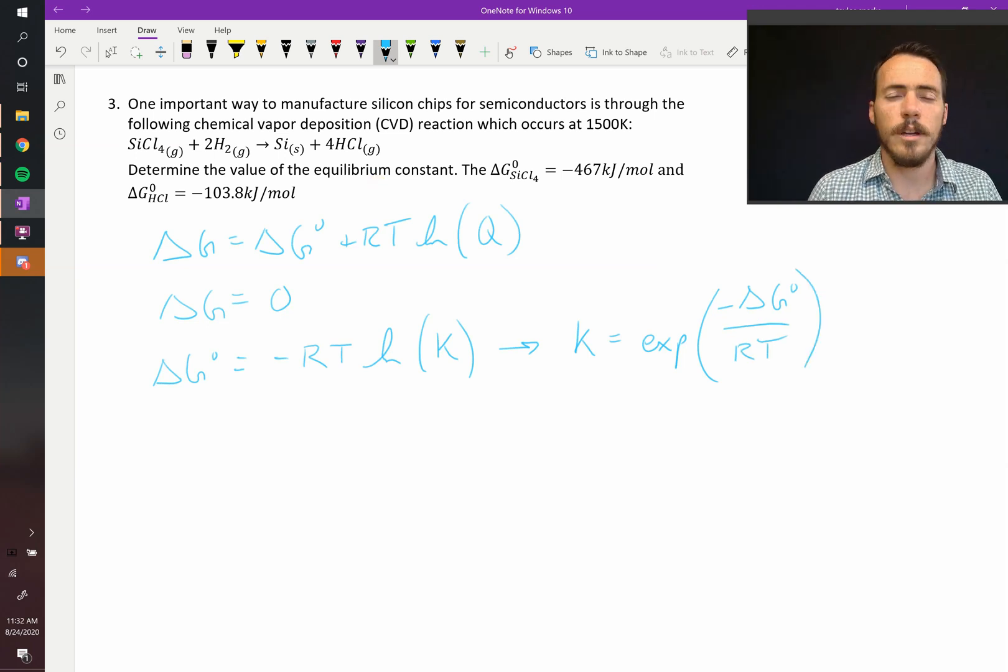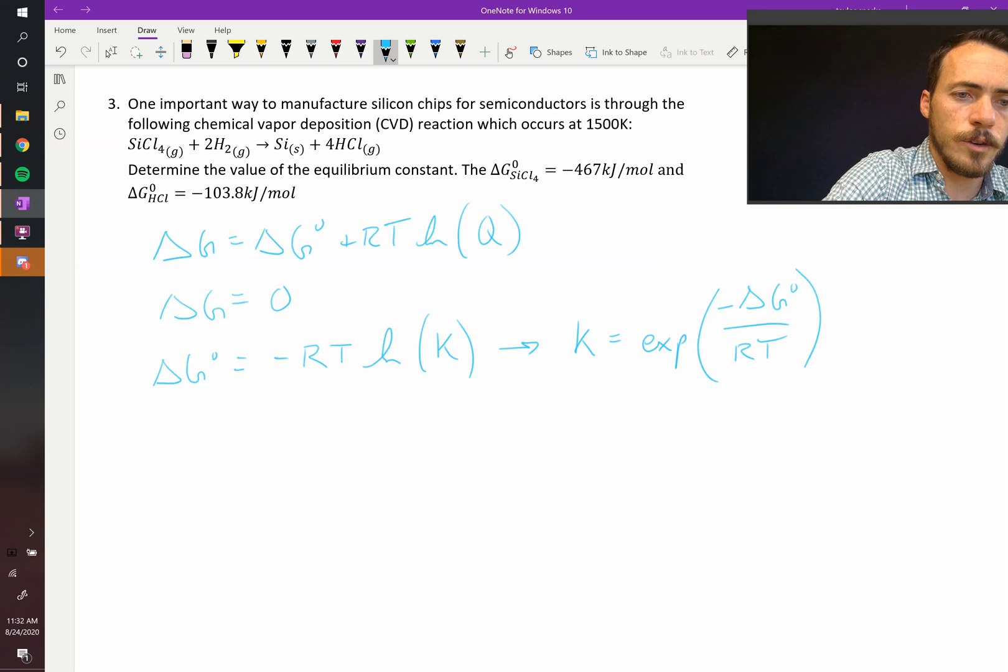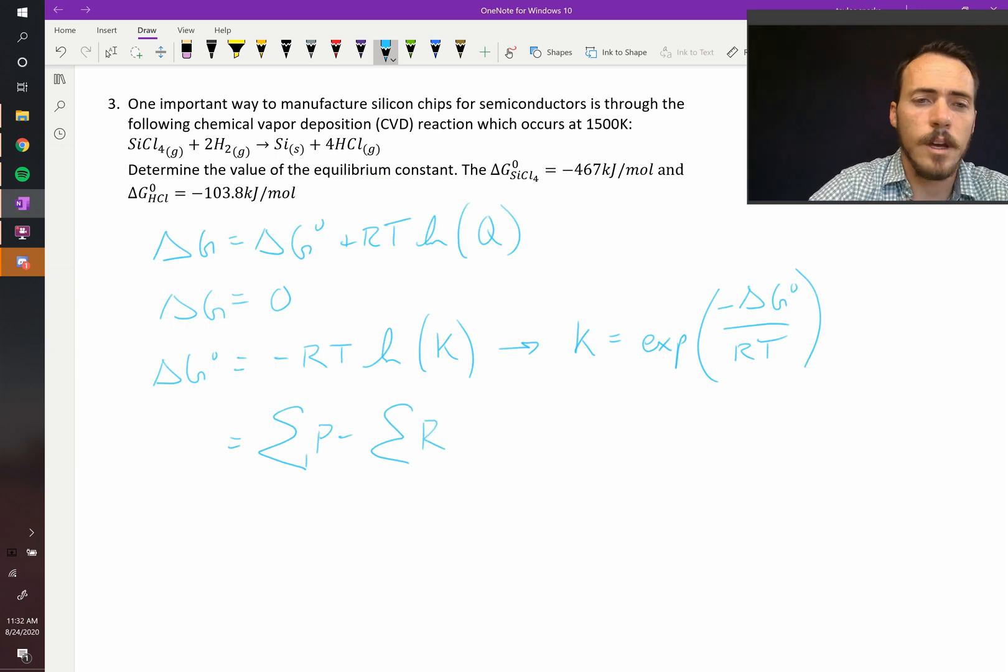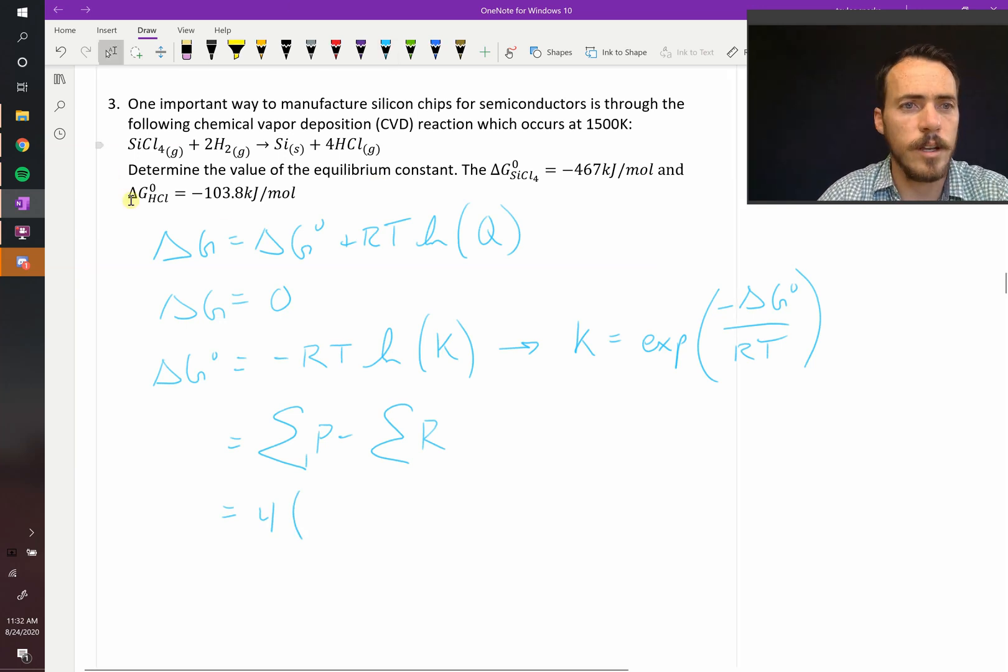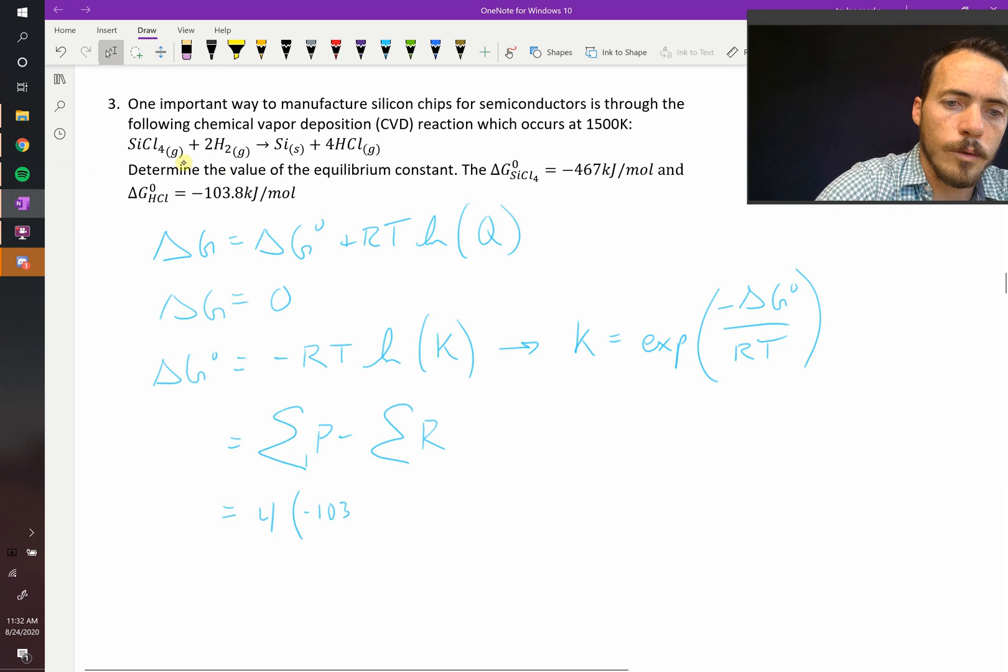So what is delta G naught? For that, we have to remember how to solve for delta G naught. This is also equal to the sum of the products over the sum of the reactants, where you take the sum of the formation energies. So for us, that's going to be four times the formation energy of hydrochloric gas, which is negative 103.8 kilojoules per mole.